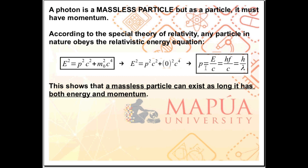P is equal to E over C. For a massless particle, the massless particle can exist as long as it has energy and momentum. E is equal to H F, so P is equal to H F over C.